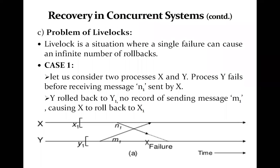The problem of livelocks: in the previous two circumstances, processes had to roll back because one cooperating process failed. In roll-back recovery, a livelock is a situation where a single failure can cause an infinite number of rollbacks, preventing the system from making any progress — the system gets stuck in an infinite loop of rollbacks.